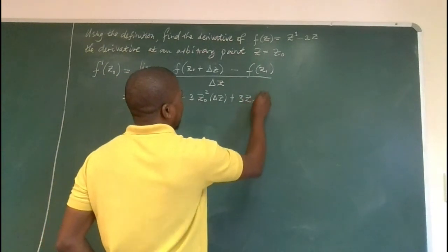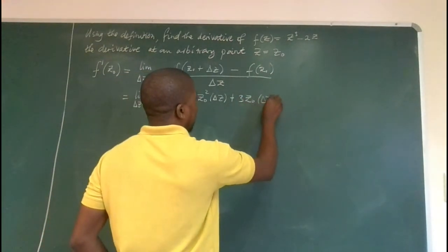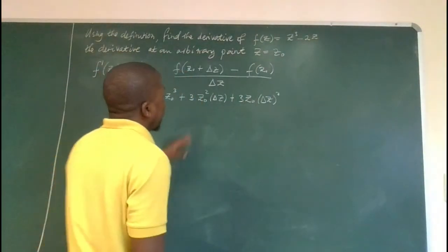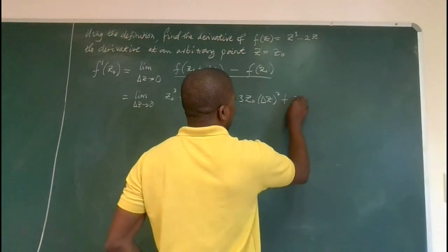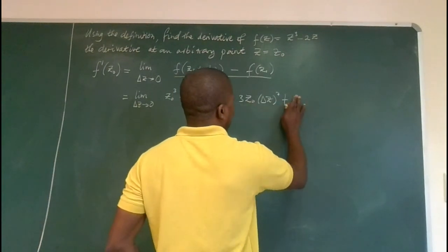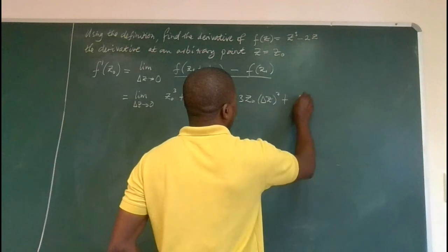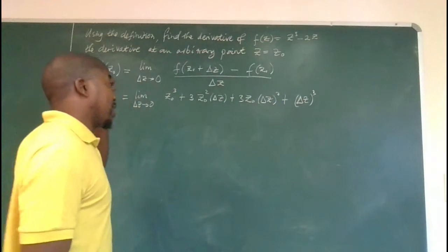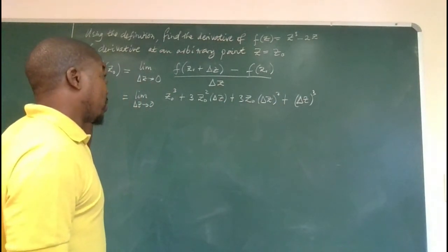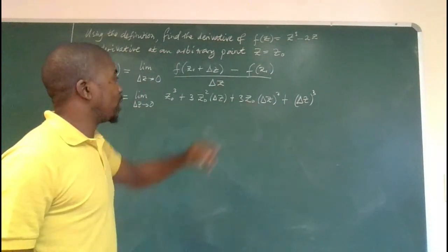So z naught and the delta z will have power two. And the last one, I think it would be z naught would be to power of zero, so we don't need z naught anymore. So we are almost at delta z to power of three. This will last, the last quantity one, three, three, one is Pascal's triangle.